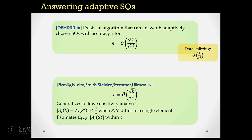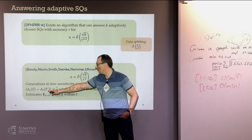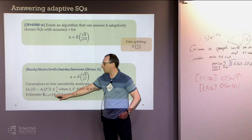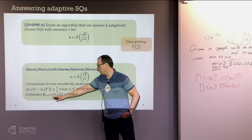They also showed that the same algorithm can be generalized to so-called low-sensitivity analyses or queries. Low-sensitivity analyses are all those analyses that are real-valued where the difference between the value on two adjacent datasets is at most 1/N. The statistical query mean is a low-sensitivity query, and the value of these queries on fresh data is also highly concentrated around the mean, so this algorithm estimates the expectation of running the analysis on fresh data.